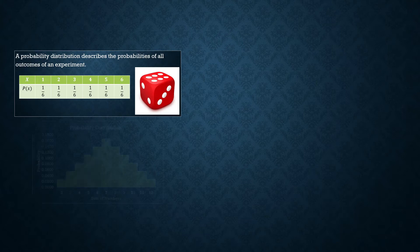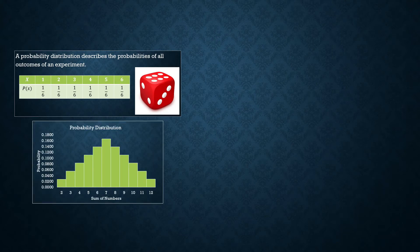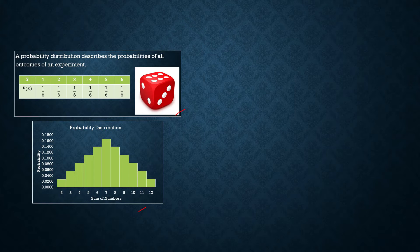Let us remind ourselves of the use of a Probability Distribution. A Probability Distribution can be in the form of a table or a Probability Histogram. For example, in the experiment of throwing a die, the probability that 4 will appear in one throw is found by going to the Probability Distribution table, and it equals 1 over 6.